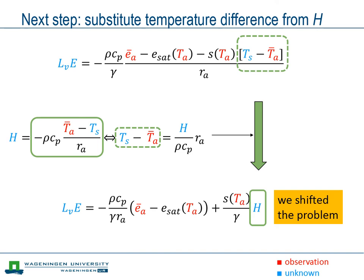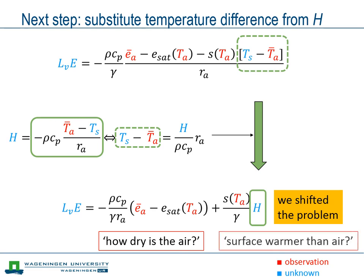So again, we shifted the problem without really solving it. Yet at this stage, we already see two separate parts in the equation for the latent heat flux. The first one is related to the dryness of the air: the latent heat flux increases if the difference between actual vapor pressure and saturated vapor pressure increases. You could interpret this as the atmospheric demand for water vapor. The second term is directly related to the temperature difference between surface and air — it indicates the part of evapotranspiration related to energy supply that has heated the surface above the air temperature.